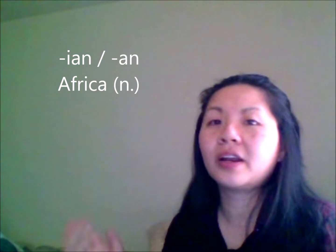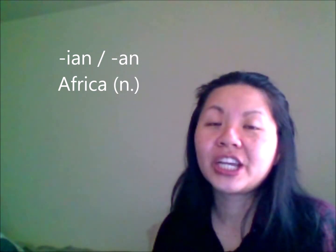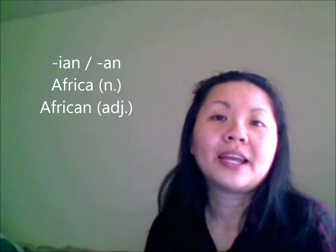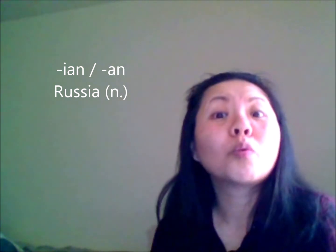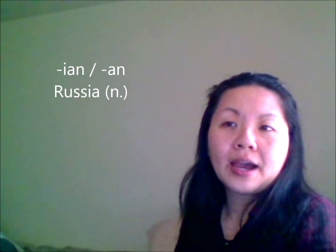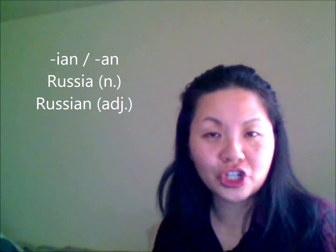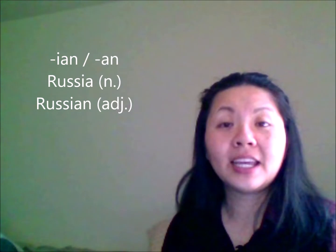The next suffix: I-A-N or A-N. The word is "Africa." How would I change Africa, the noun, to an adjective? African — good. So I can say that was African art. And if we use I-A-N, let's say the word "Russia." How would I change that to an adjective? It's Russian — we add I-A-N. He is Russian, and Russian would be the adjective.